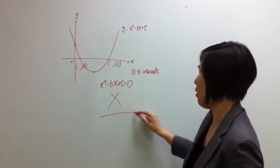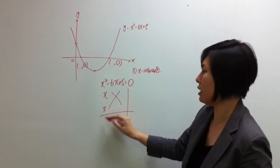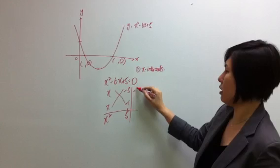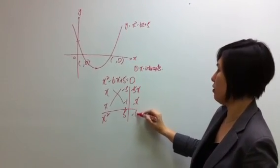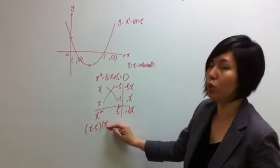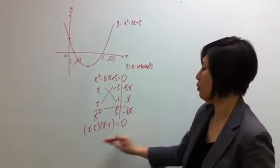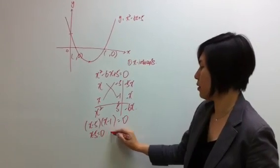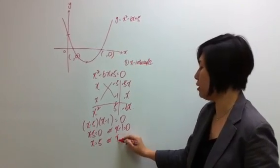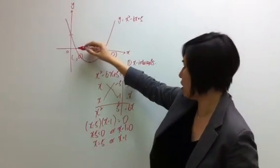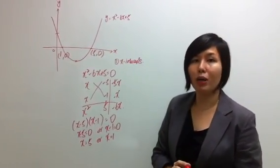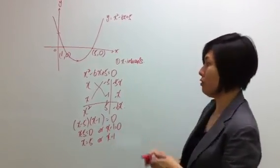Let me show you how to do this using the cross method. We set up x times x to get x-squared, then find factors that give us negative 5x and negative x, combining to negative 6x. These give us the two factors, and we solve for x. We get two values of x, giving us the two x-intercepts: (1, 0) and (5, 0).